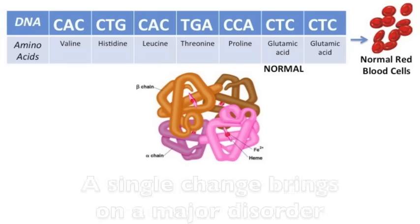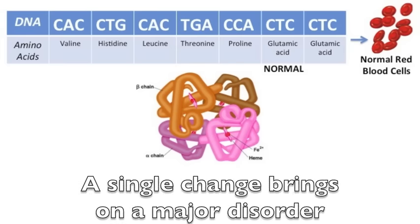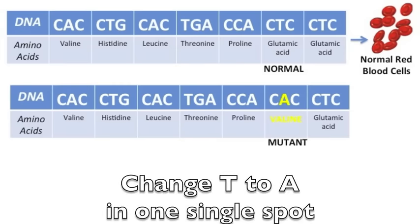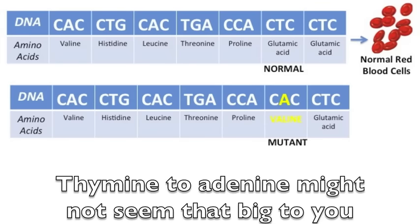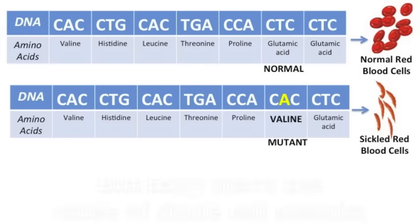Hundreds of bases in a predetermined order, a single change brings on a major disorder. Change T to A in one single spot, this little point mutation might not seem like a lot. Thymine to adenine might not seem that big to you, but baby that's the cause of sickle cell anemia.